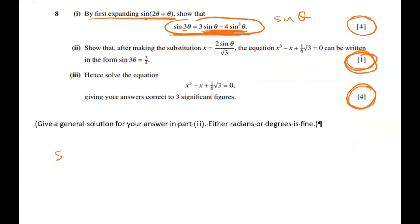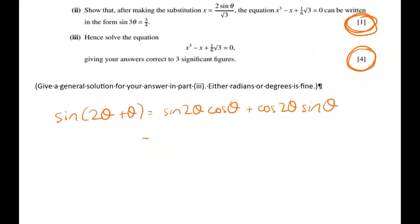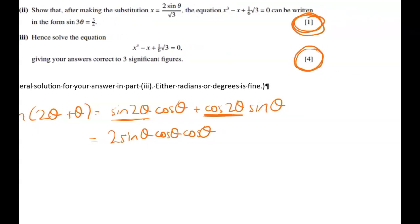So we're going to use my compound angle formula. So sine of two theta plus theta is equal to sine two theta cos theta plus cos two theta sine theta. Now whenever I see sine of two theta there's only one possible substitution in here. So we're going to have two sine theta cos theta times cos theta.